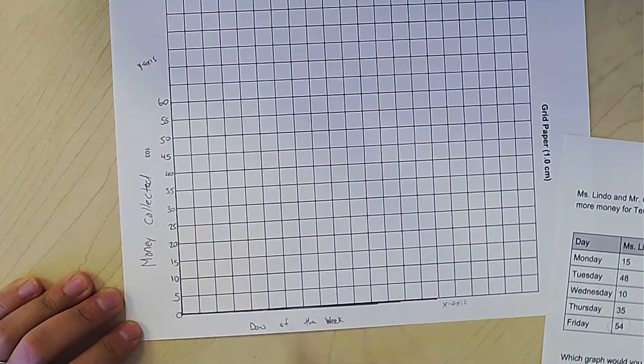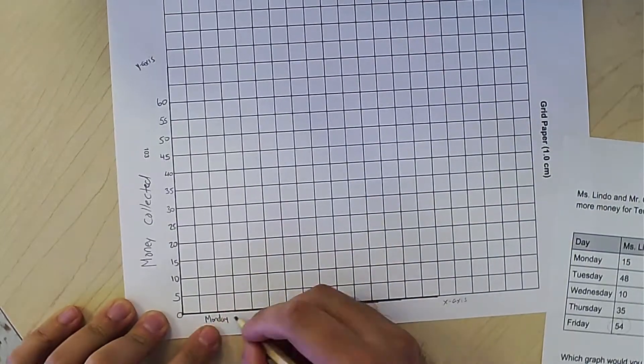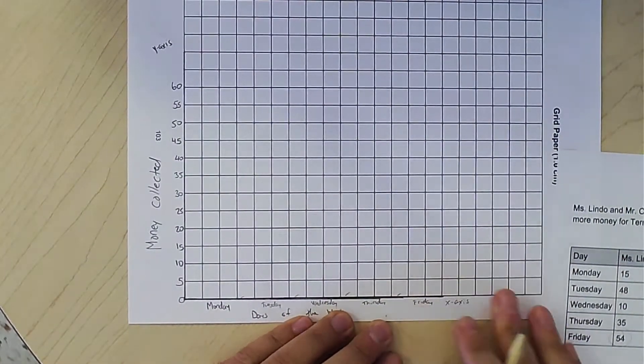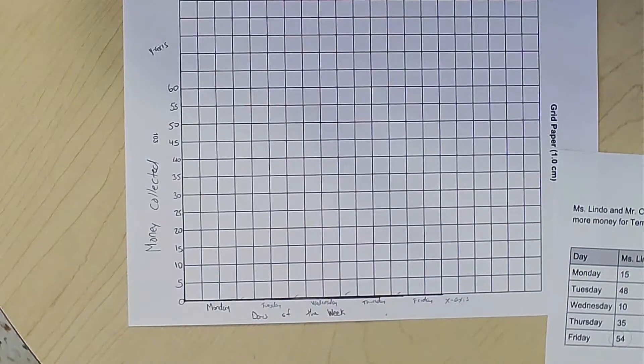So now it's time to label the days of the week. So now you have Monday, Tuesday. How am I going to graph this now?